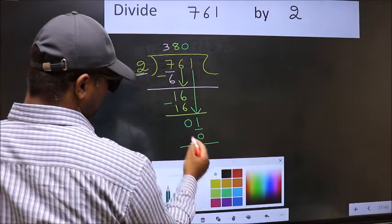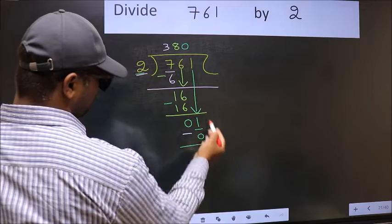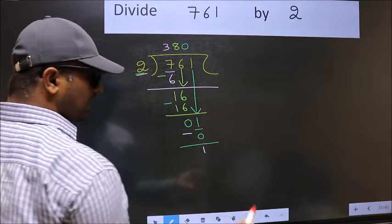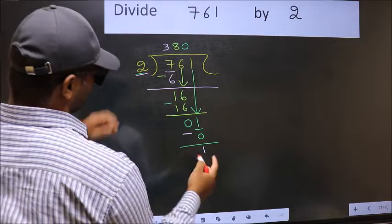Now, you subtract. 1 minus 0 is 1. Over here, no numbers to bring it down. And also, 1 is smaller than 2.